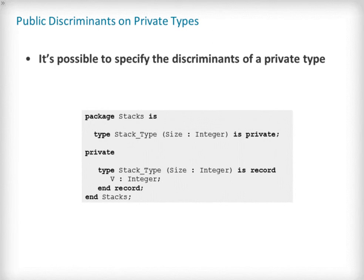It is possible to have a compromise between simple and indefinite private types by specifying a discriminant. Here we show an example where stack type is using an integer typed discriminant called size. The private section of the package goes on to complete the implementation of stack type using a completed discriminated record.